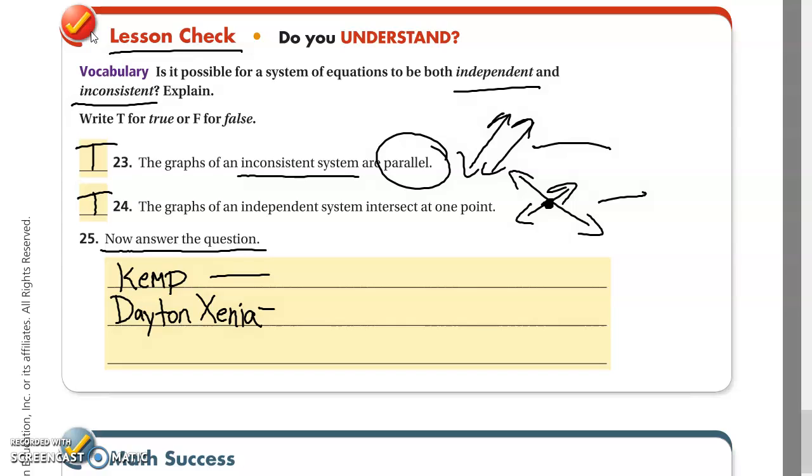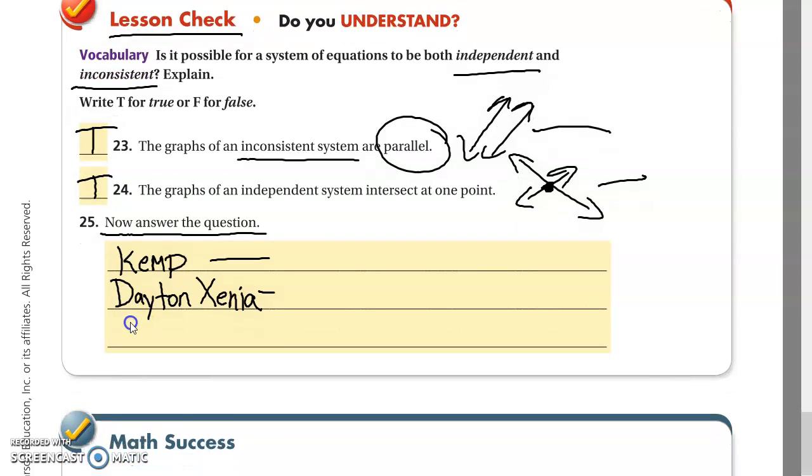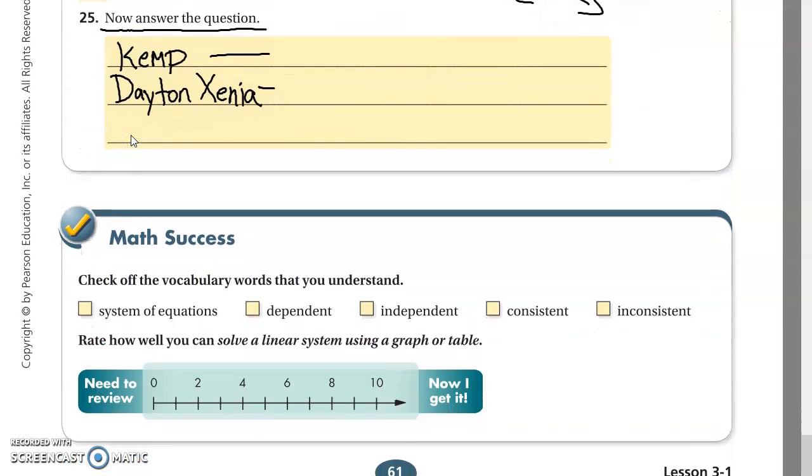So that's it for 3-1. Do the math success at the end. You can do that stuff that you understand and show how well you solve linear equations. So do that. You'll get your credits.